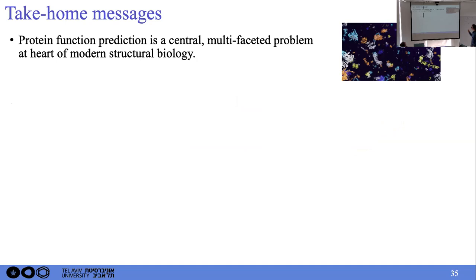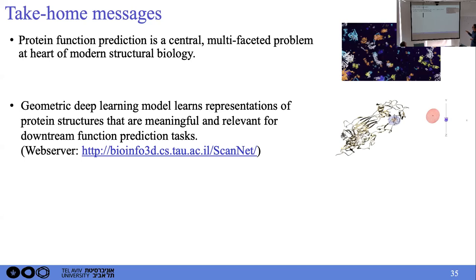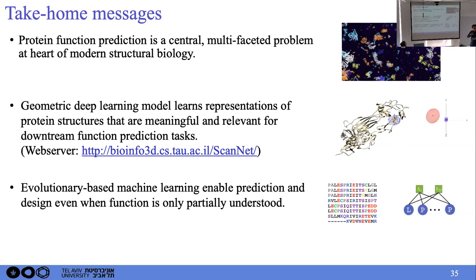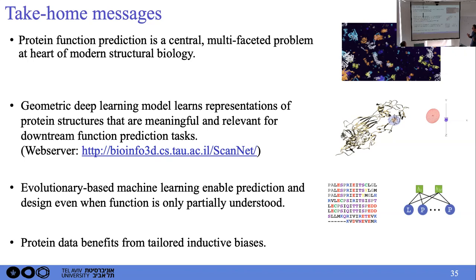Wrapping up: the take-home messages. Protein function prediction is a central and multifaceted problem at the heart of modern structural biology. We devised ScanNet, a geometric deep learning model for learning representations of protein structures meaningful for downstream function prediction, with a published paper and web server. In cases where structure is unavailable, you can use a sequence model based on evolutionary data to predict function or design new proteins. The argument is that protein data benefits from inductive biases tailored to proteins — this is a personal opinion, but the results support it.